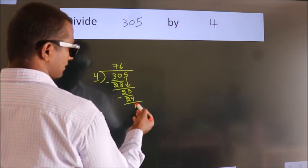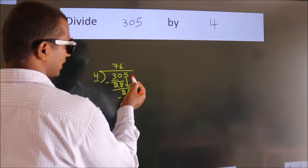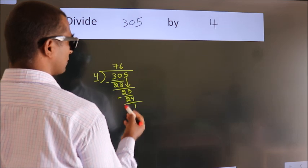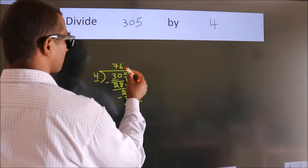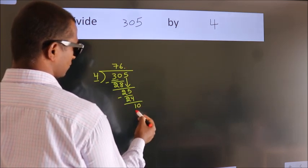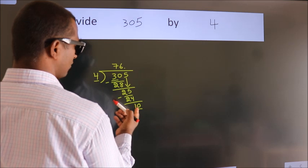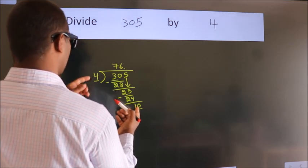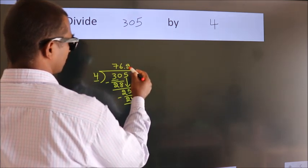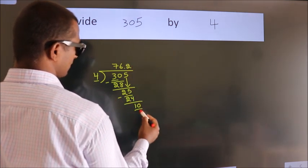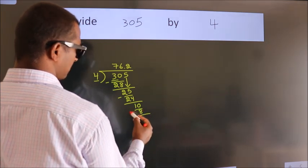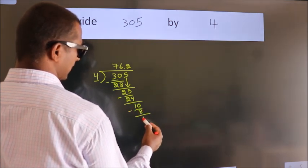After this, there are no more numbers to bring down. So what we do is we put a dot and take 0, giving us 10. A number close to 10 — in the 4 times table is 4 twos, 8. Now we subtract and we get 2.